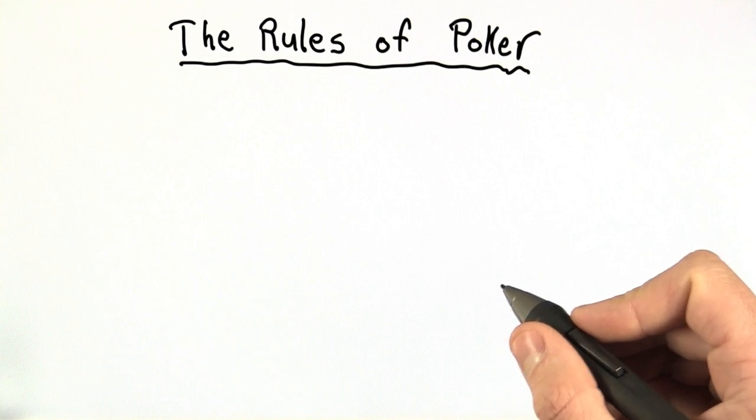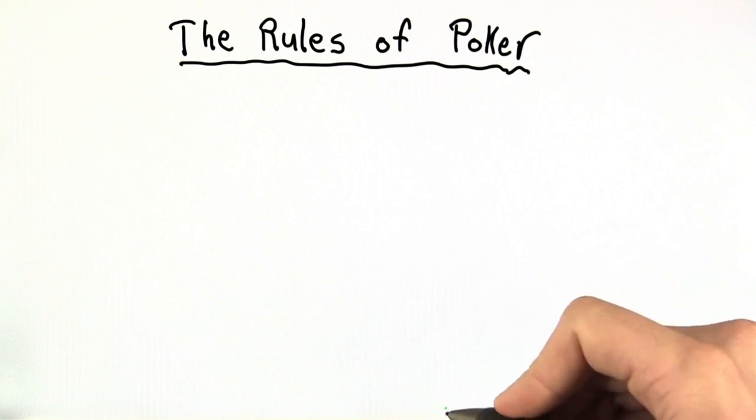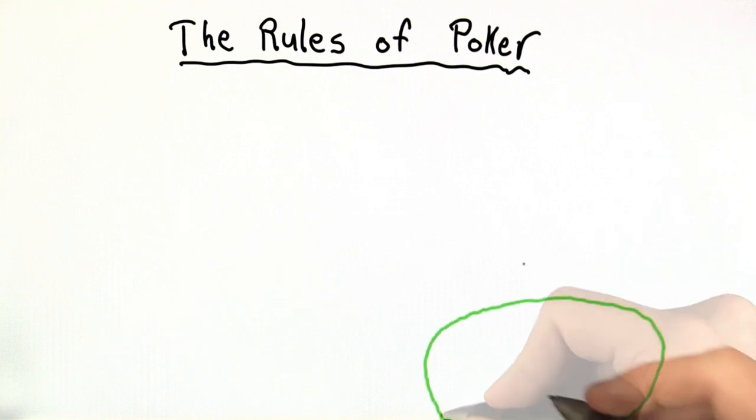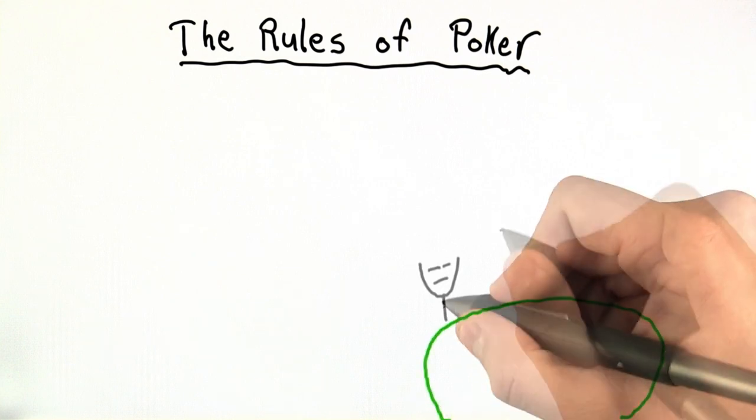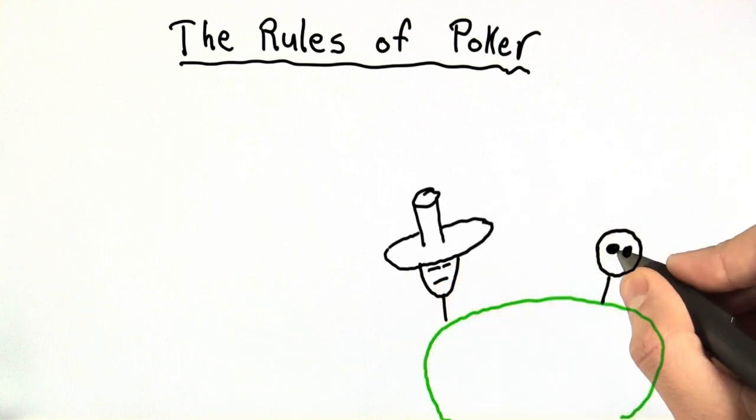If all you know about poker is what you've seen on TV or in a casino, you may think it's pretty complicated. There's that intimidating green table, and it's surrounded by some very serious looking people. And these people often have very silly hats or ridiculous sunglasses.